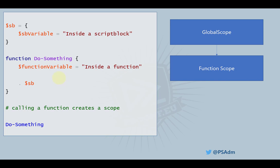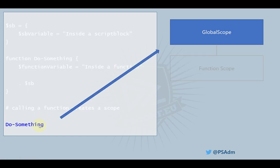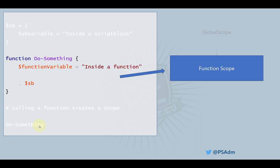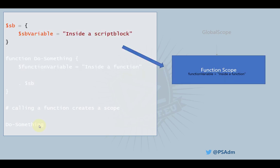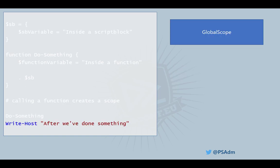Now let's look at the same script using the dot source operator instead of the call operator. The dot source operator does not create a new scope when executing a script block. We run the script: 'do something' runs in the global scope, then we go into the function 'do something', which creates a new scope — the function scope — under the global scope. We define 'function variable' within the function scope, same as before. But now since we're using the dot source operator on the script block, it does not create a new scope. So when we enter the script block, we're still within the function scope, and 'sb variable' gets created there too.